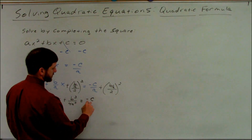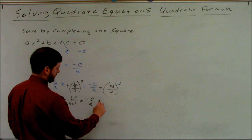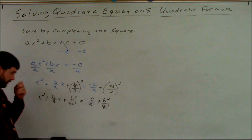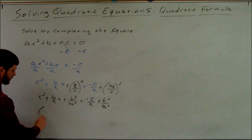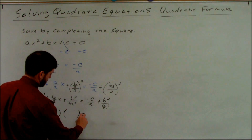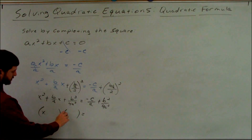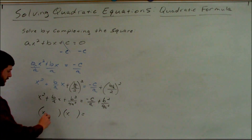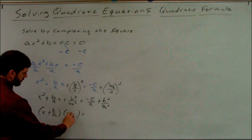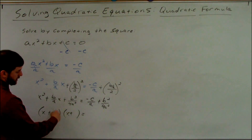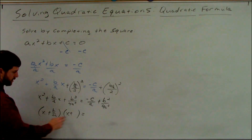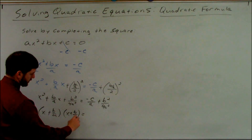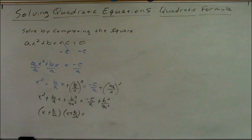On the right hand side: negative c over a plus b squared over 4a squared. Now we'll go through and factor. So I get x squared is x and x; b squared over 4a squared is b over 2a. Remember we're just saying what was multiplied by itself: b squared was b and b, 4 was 2 and 2, a was a and a. So b over 2a and b over 2a.